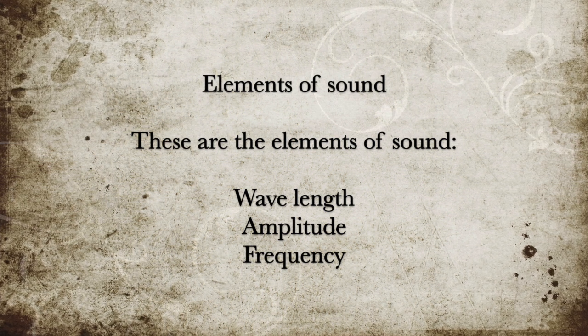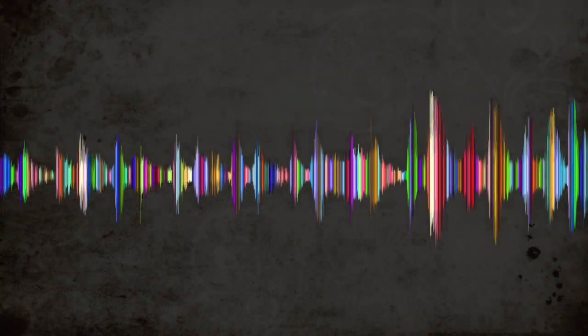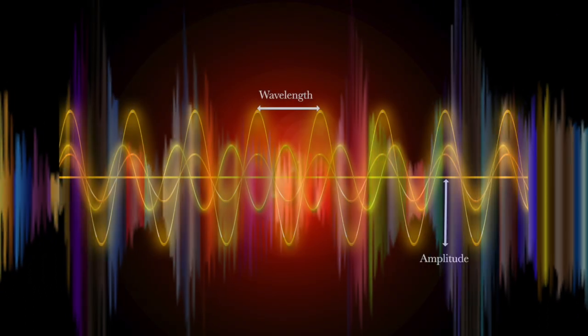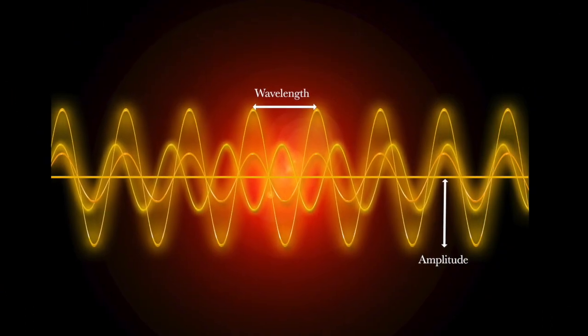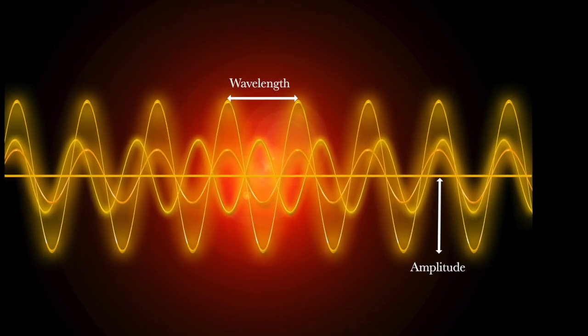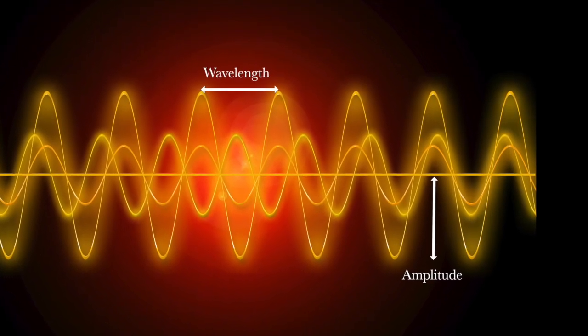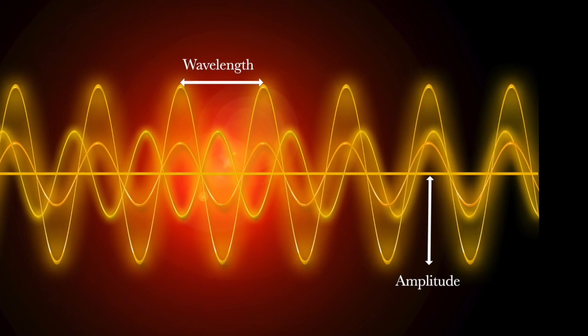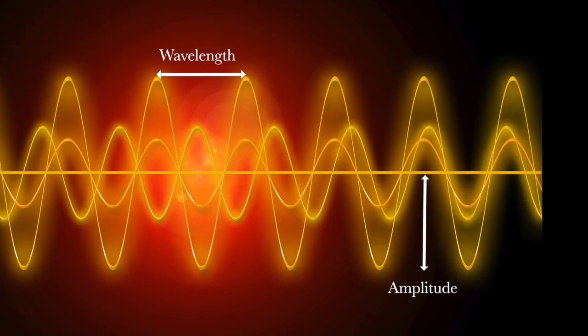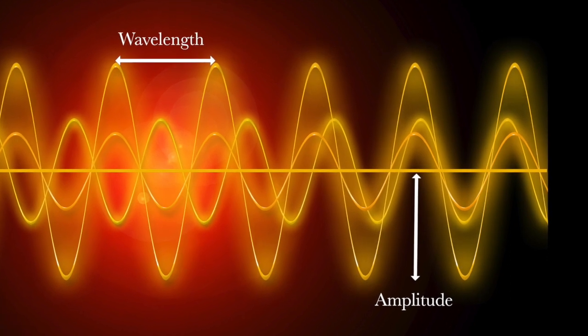The elements of sound are wavelength, amplitude, and frequency. A wavelength is the distance between two peaks, and the amplitude is the distance from the base to the highest point of the wavelength. The longer the wavelength, the deeper the sound; the longer the amplitude, the louder the sound.